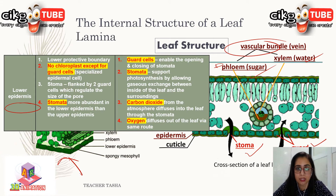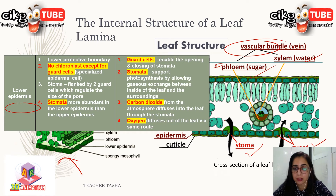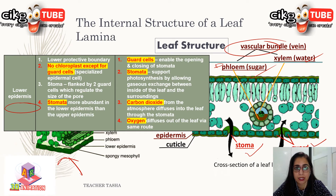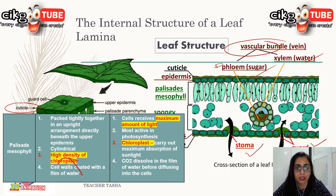The lower epidermis also consists of epidermal cells, again without chloroplasts, and it helps protect the leaf from damage. It has many stomata, which allow the exchange of gases. Each stoma is surrounded by two guard cells. Carbon dioxide diffuses into the leaf and oxygen diffuses out of the leaf via the stomata.